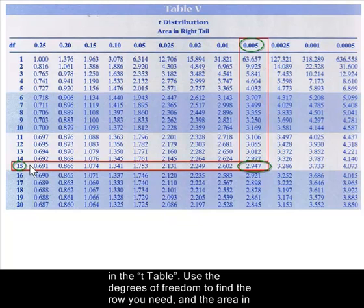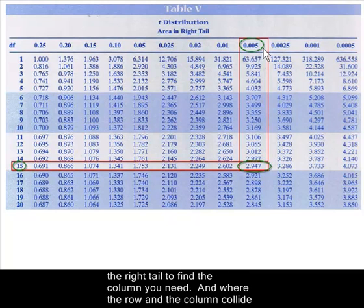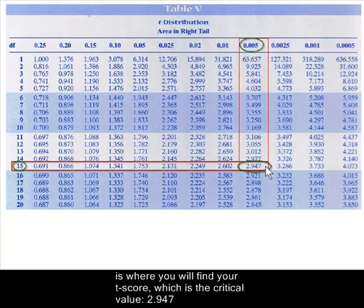Use the degrees of freedom to find the row you need and the area in the right tail to find the column you need. And where the row and column collide is where you will find your T score, which is the critical value, 2.947.